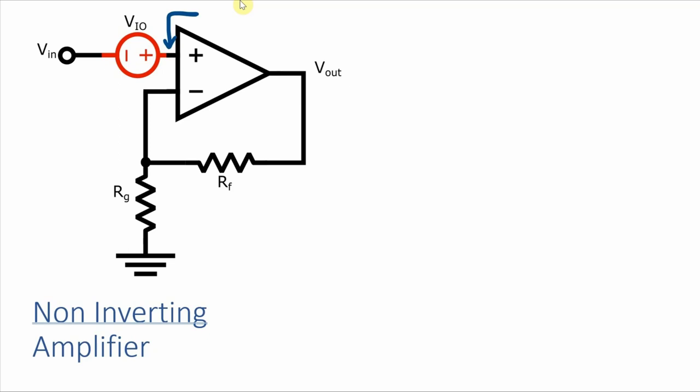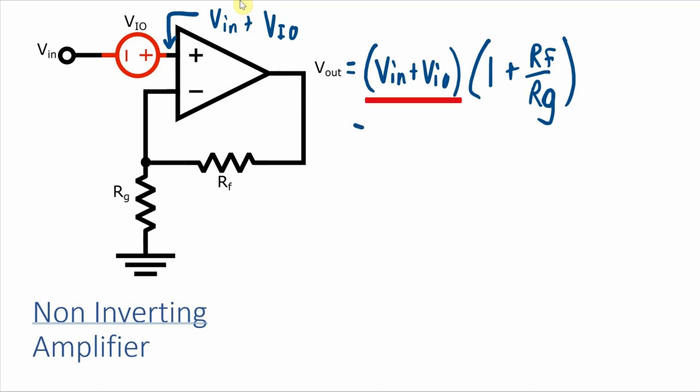The voltage at the non-inverting pin of the op-amp is going to be equal to the input voltage plus the input offset voltage, according to our model. And that means that the output voltage is equal to VIN plus VIO times the gain of the non-inverting amplifier, which you should know as 1 plus RF over RG. And distributing these terms over the gain, we have VIN times 1 plus RF over RG, which is the value of gain that we want, plus the input offset voltage times that gain.